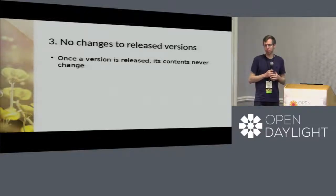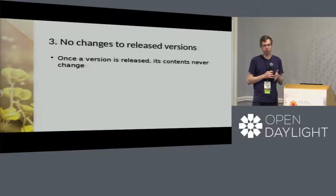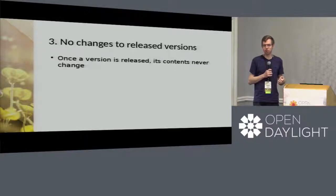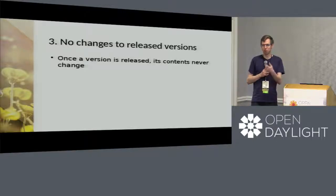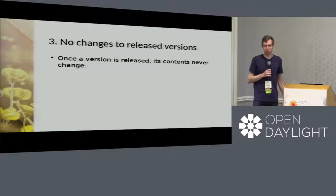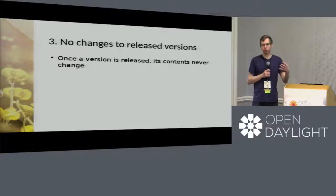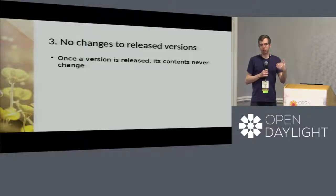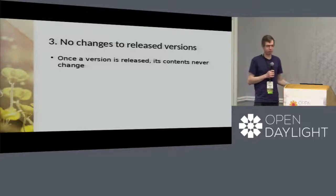The third point — and one that sometimes gets forgotten — is that once an artifact is released with a version number, it never, ever changes. Some projects ignore that and silently update the tarball or move the tag when they find a bug, as we were discussing about OpenStack. If you do this, bad things happen. Once you've released something with a given version, we can take a hash of that, and it should never, ever change.